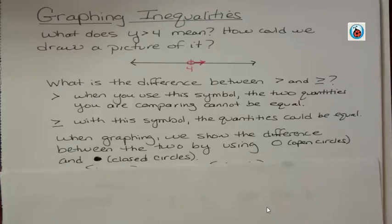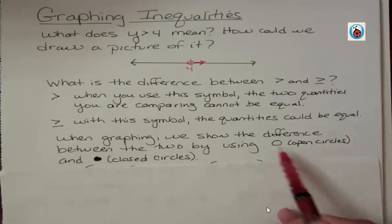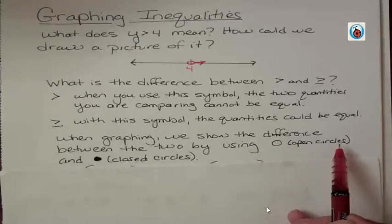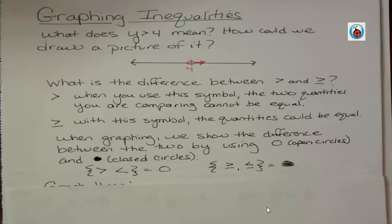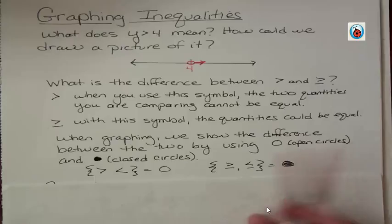When graphing, we show the difference between the two by using an open circle and a closed circle. If you have greater than or less than, you use an open circle. If you have greater than equal to or less than equal to, then you use a closed or a shaded circle.